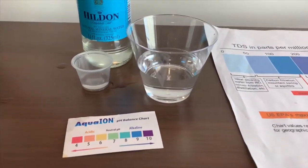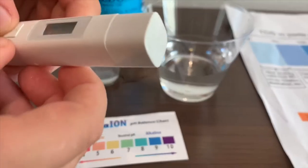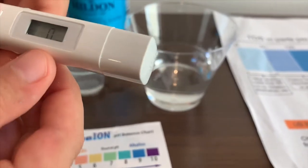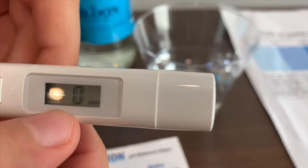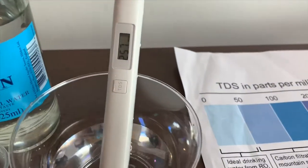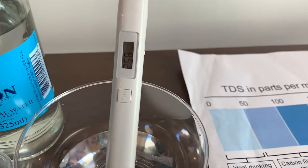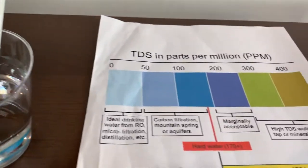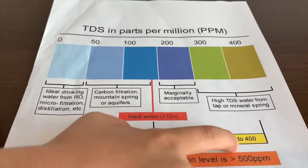First, we're going to test the TDS level. Turn on the TDS tester, make sure it says 0, and let's put it in. 258 - that is average tap water.